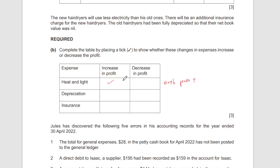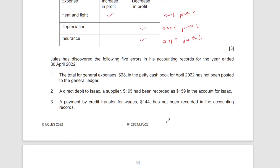Depreciation — previously the old hair dryers had no depreciation left because they were fully depreciated, but this new equipment worth 1900 will now be depreciated. So depreciation expense will go up and profit will decrease. Insurance — as stated, there'll be additional insurance, so expenses go up and profit goes down — that's a decrease in profit.